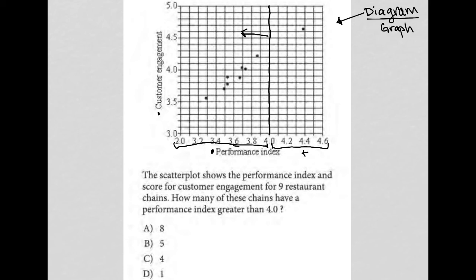So how many of these chains have a performance index greater than four? Well, there's only this one. That's the only point that's to the right of that vertical line, and therefore the answer must be choice D.